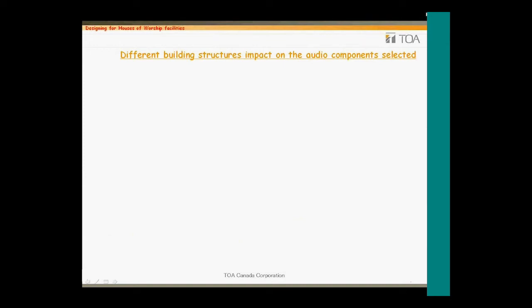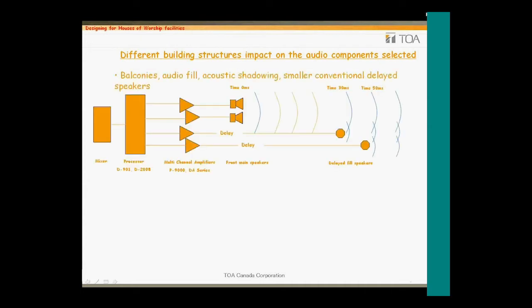Large spaces tend to have long RT60 characteristics, and care must be taken to select the appropriate speaker types. These spaces also tend to have great depths where sound must be delivered over a great distance. Turning up the volume is not the answer, as this tends to excite the reverberant field, provide uncomfortable sound pressure levels to those at the front, and presents a greater challenge to system stability. To overcome this, additional speakers must be provided further back into the room, requiring additional processing devices and amplifiers to delay the audio to these speakers and create a coherent wave front.